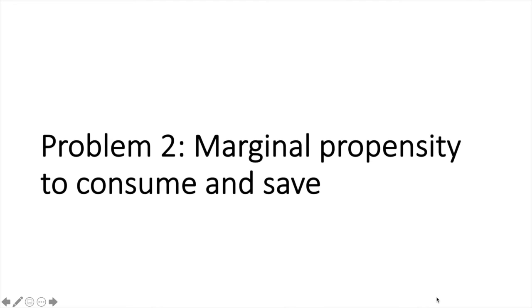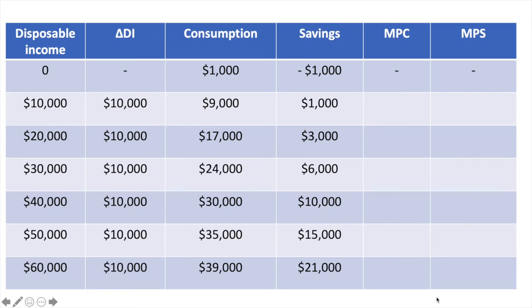This next problem is a bit more complicated. Once again, I'll give you some basic information and you'll need to calculate the values for two propensities. This time we're looking at the marginal propensity to consume and save. This information is slightly different from the previous table, so pause the video now and try to complete the problem. I'll share my pathway to the answers in the following part of the video.